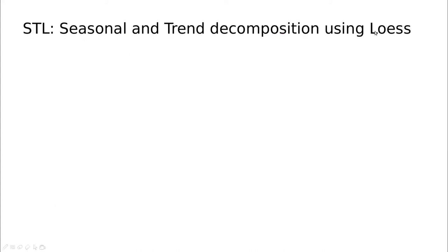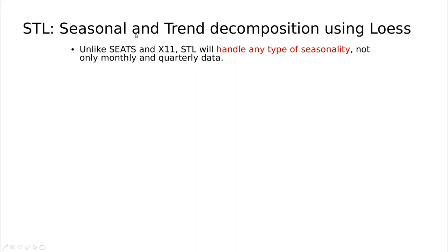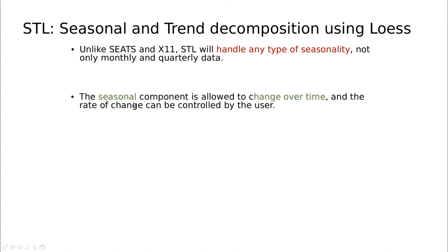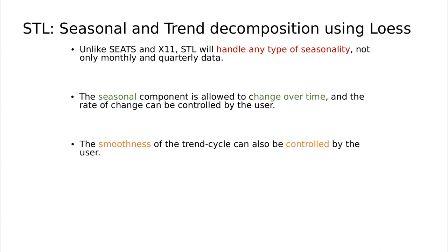The last method is STL. If you remember LOESS, it's a method for non-parametric smoothing of the signal. Here we use LOESS to extract the trend and then work with seasonality. The good thing with LOESS is that it can handle any type of data, not just quarterly or monthly data as in X11 and SEATS. We also allow the seasonal component to change over time, so we still have modulation. And because we are using LOESS, you can control smoothness — different weights for averaging at each point — which affects both the trend and the seasonal part.